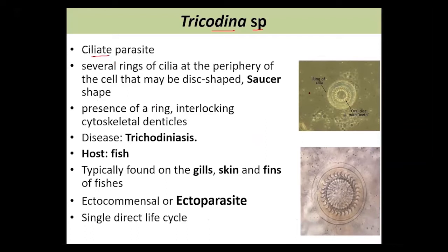Trichodina species is a ciliate parasite. In the outer region, we can see many cilia for locomotion. They have a specific disc-shaped or saucer-shaped form, and they have a denticle band — here you can see the denticle band or the oral disc. That is the characteristic feature of Trichodina, which have cytoskeletal denticles.